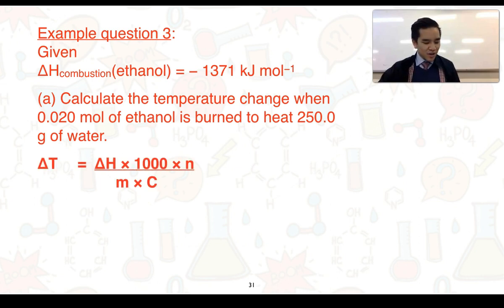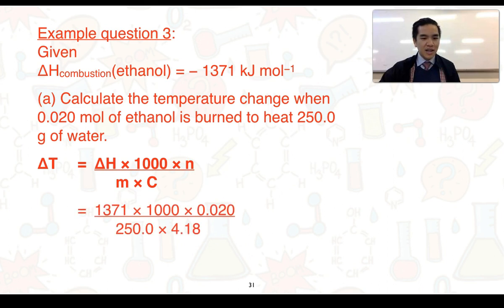If we use our formula we should have everything that is necessary, so we're just going to plug them in. ΔH being −1371, we're just going to leave that negative out because ΔT is just going to result in a positive change, and given this is exothermic we know this is going to be a temperature increase.